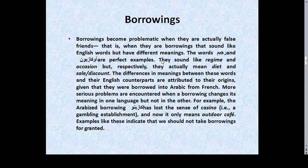Borrowings become problematic when they are actually false friends — that is, when they sound like English words but have different meanings. The words 'régime' and 'occasion' are perfect examples: they sound like 'regime' and 'occasion' but in Arabic they actually mean 'diet' and 'sale/discount' respectively, because they were borrowed from French rather than English. More serious problems arise when a borrowing changes its meaning in one language but not in the other. For example, the Arabized borrowing 'casino' has lost the sense of a gambling establishment and now only means 'outdoor café.' Examples like this indicate that we should not take borrowings for granted.